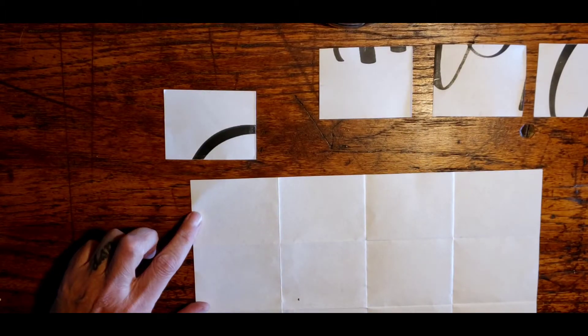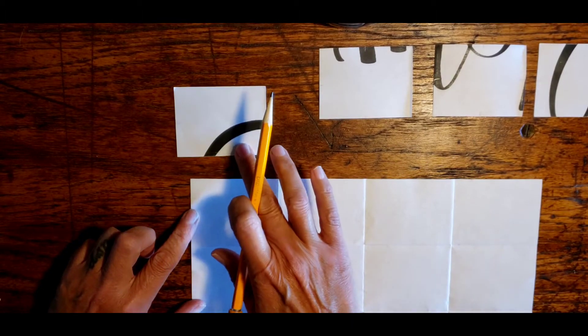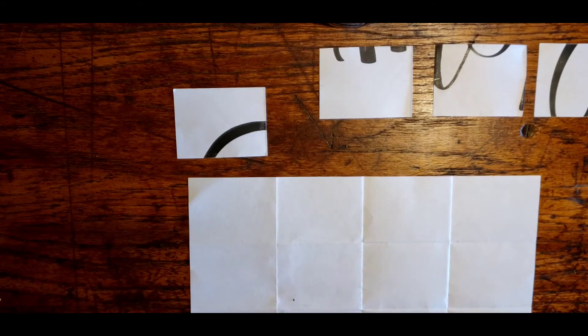We're going to fill the top left rectangle first using copying what we see. So as I said, set up the conditions for your right brain.